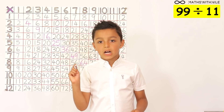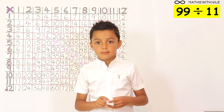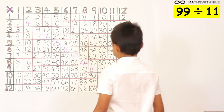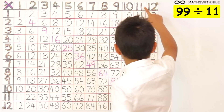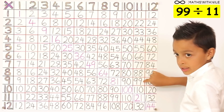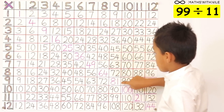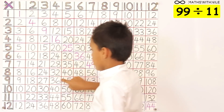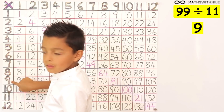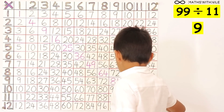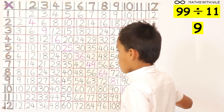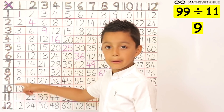99 divided by 11. What times tables are you using? 11. I'll go down to 99 in the 11 times table and then go across, and the answer is 9. So 99 divided by 11 is equal to 9. Very good.